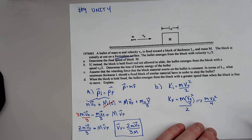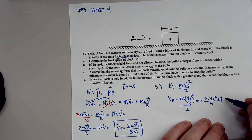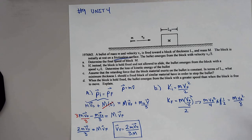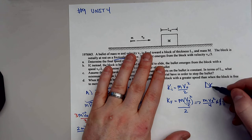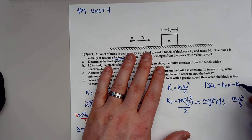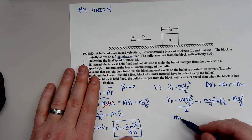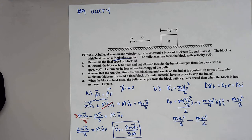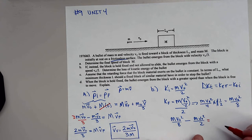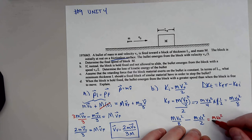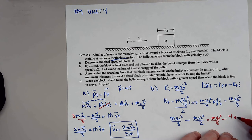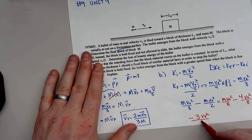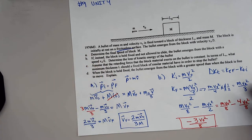Remember: when you divide by two, you multiply by the reciprocal one over two, giving KE final equals m·V naught squared all over eight. The change in kinetic energy equals KE final minus KE initial: that's m·V naught squared over eight minus m·V naught squared over two. The least common denominator is eight, so this becomes m·V naught squared over eight minus four m·V naught squared over eight, which gives negative three m·V naught squared divided by eight. That's how much kinetic energy was lost.